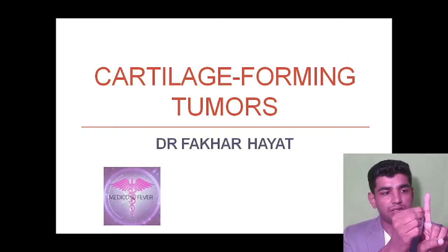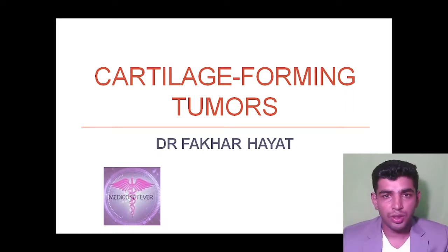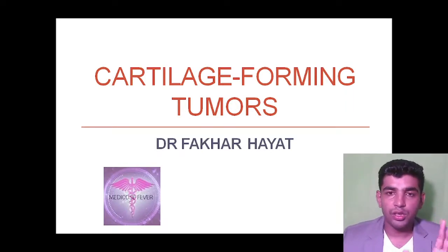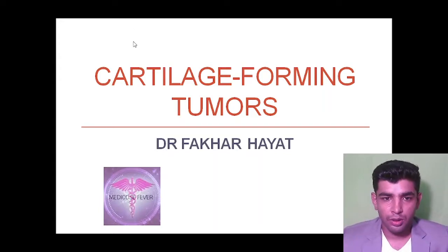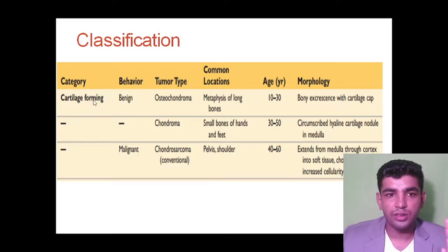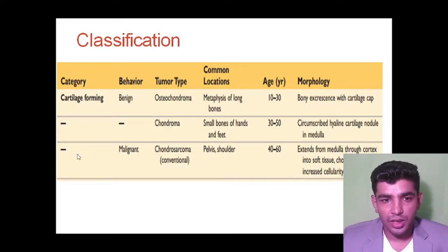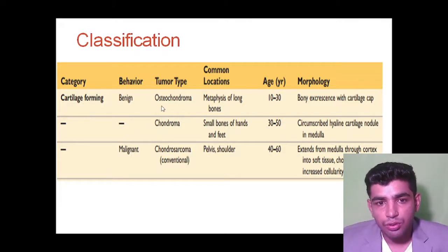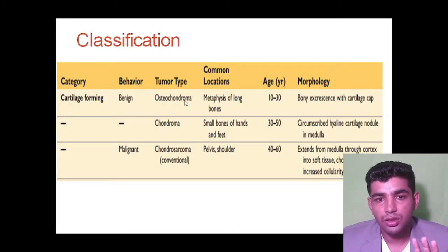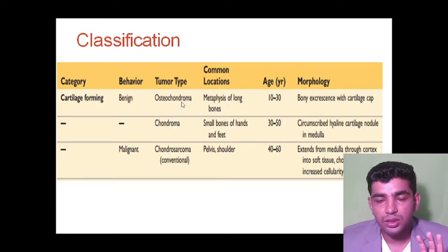Cartilage-forming tumors are defined as formation of cartilage near the bones area. The classification may be benign or malignant. The categories we will examine are: behavior, tumor type, common location, age, and morphology. Benign types include osteochondroma — where 'osteo' means bone, 'chondro' means cartilage formation, and 'oma' means a tumor — and chondroma.